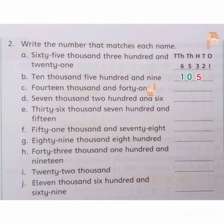10s, aur, ones ke combine part mein, hamara paas 9 given hai. So, ham 10s ke kolom me, 0, aur, ones ke kolom me, 9 write kareenge.